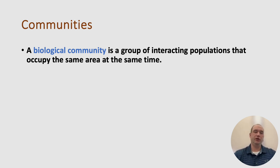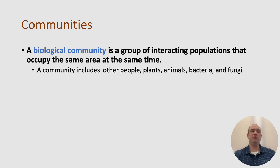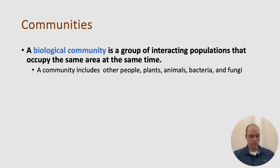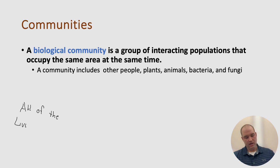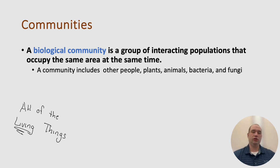A biological community is a group of interacting populations that occupy the same area at the same time. A community includes people, plants, animals, bacteria, and even fungi. When we're talking about a biological community, we're looking at all of the living things — only looking at living things in that particular area and how these living things interact. Biological communities are just looking at the living interactions that we see.